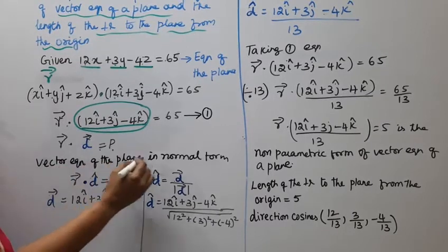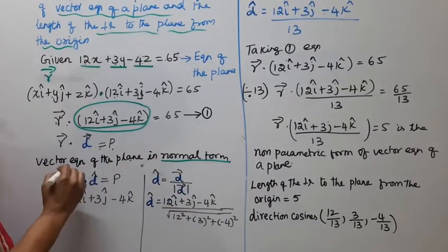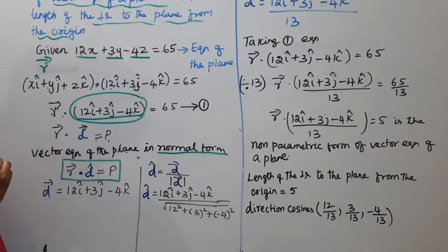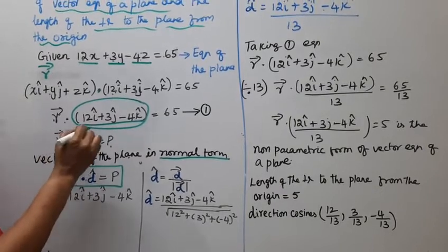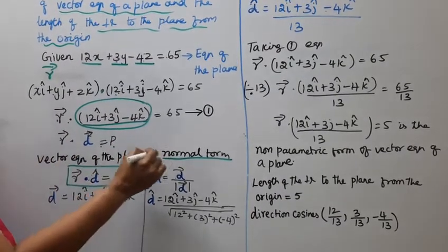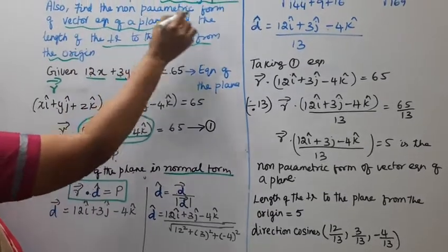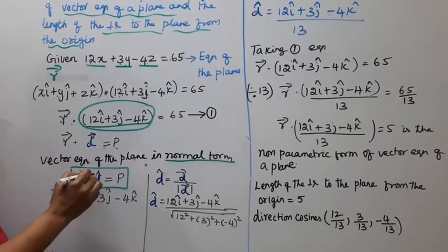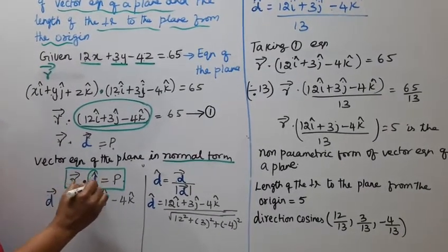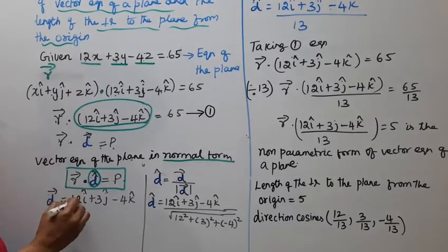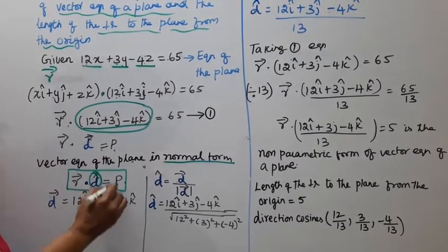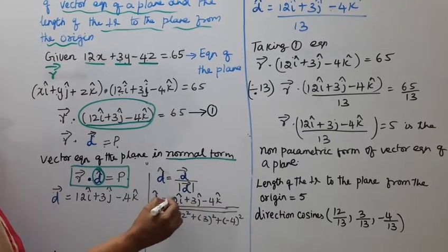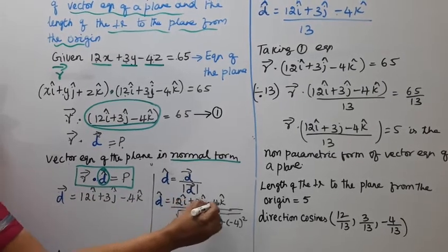The vector equation of the plane in normal form is: r vector dot d cap equal to P. We have to get the non-parametric form of the vector equation of our plane, r vector dot d cap equal to P. Then we have to get d cap. To get d vector: 12 i cap plus 3 j cap minus 4 k cap.